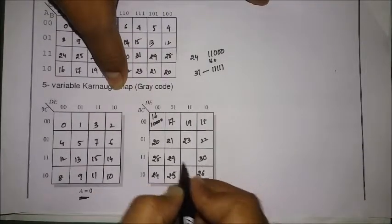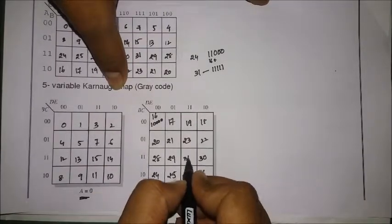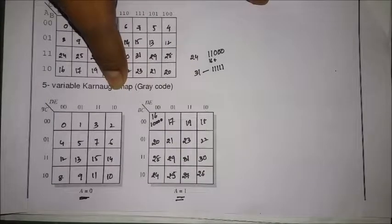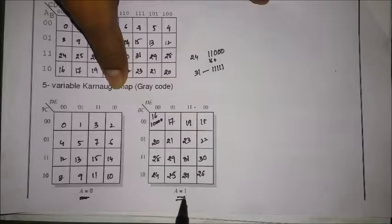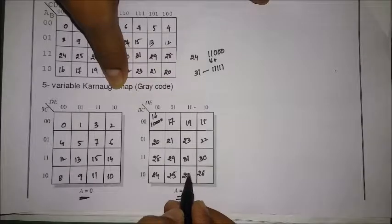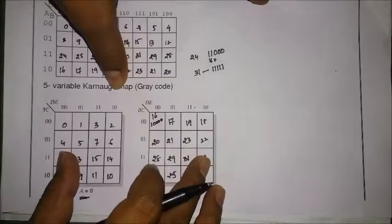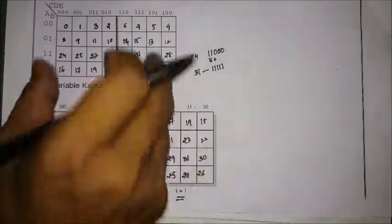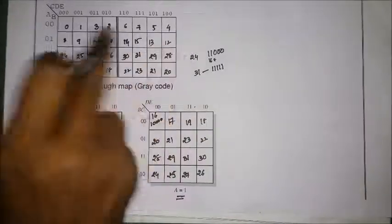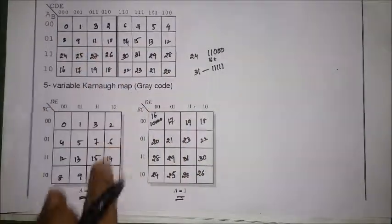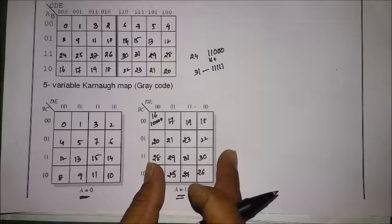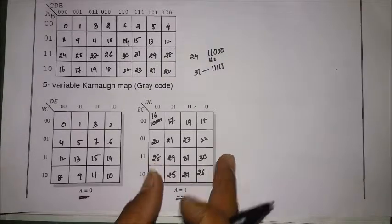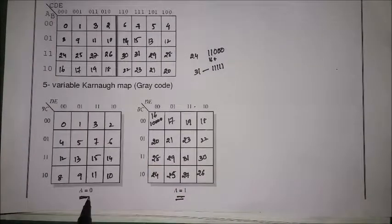Cell 31 is binary 11111, with the existing 1 for variable a. This is how we represent a five-variable K-map in two methods: one is taking all five variables together, and the second is taking two identical four-variable K-maps, assigning a equals zero for the first and a equals one for the second.